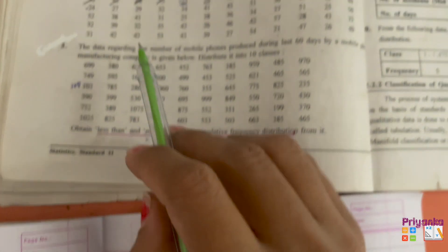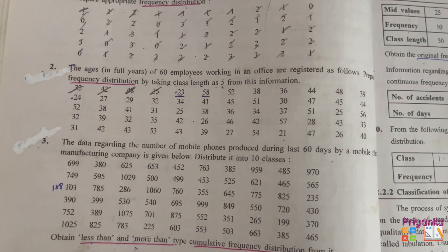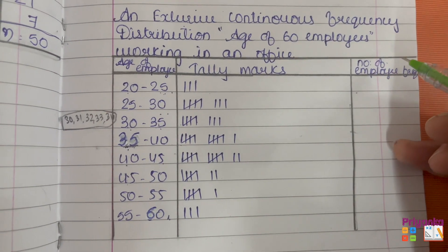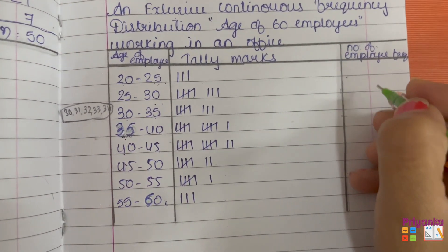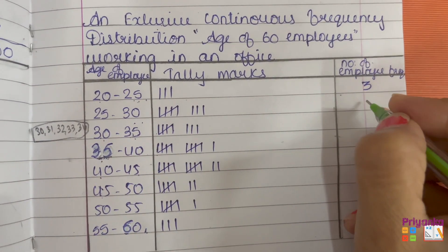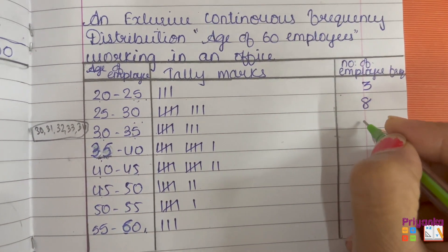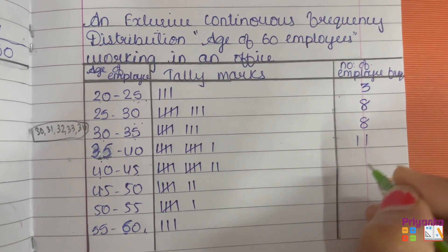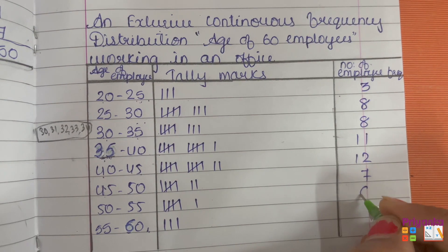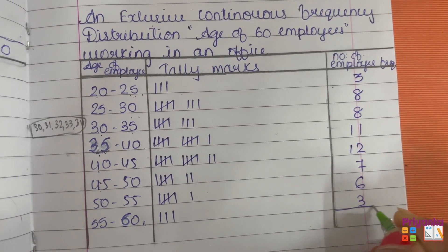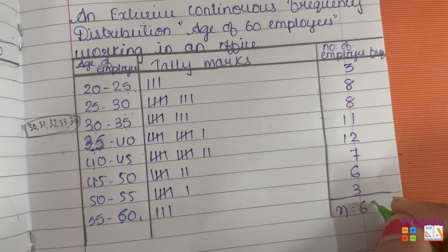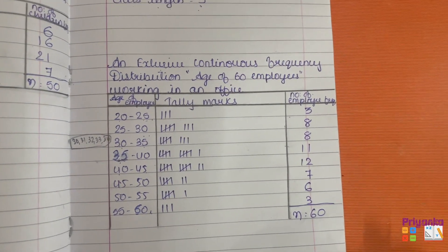After completing all the tally marking, we calculate the totals for each class: 3, 6 (5+1 skipped), 7, 8, 8, 11, 12, 7, 6, and 3. The grand total is 60. This completes the continuous frequency distribution for Question 2.